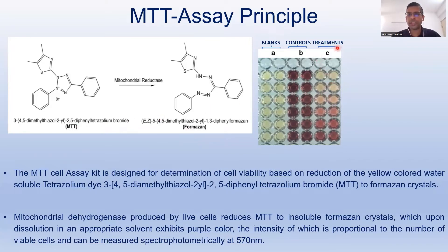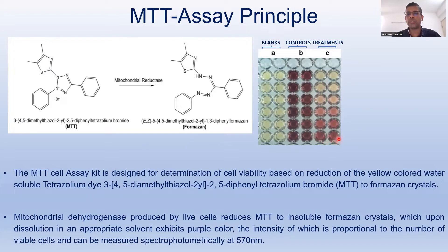On the right-hand side are the treatment wells with different concentrations of the drug. At the lowest concentration the cells can still metabolize MTT, but as the concentration increases the ability to metabolize MTT is reduced. At the highest concentration, no formazone is formed and the color remains yellowish — only the substrate is visible. This is the basic principle of MTT assay for checking whether a compound, drug, or toxin is lethal to cells.